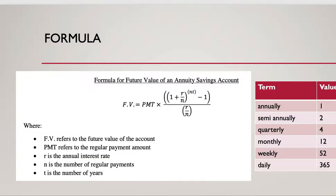The formula we're going to use for calculating the future value of the annuity — how much the annuity is worth in the future — is on the screen. Underneath the formula you can see what the different variables stand for. FV is the future value, which is how much is in the account at the end of the time period.